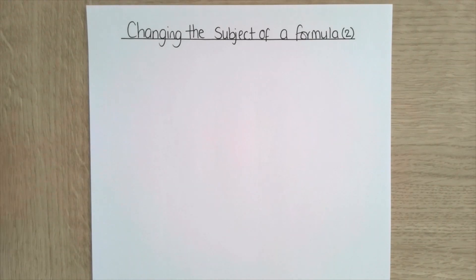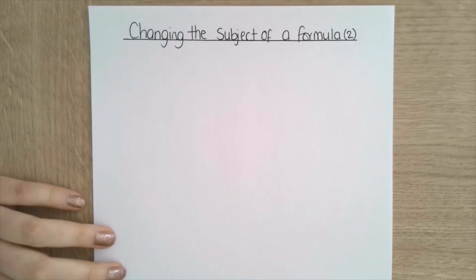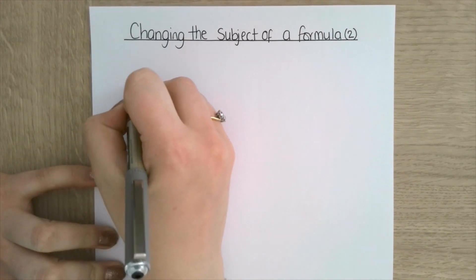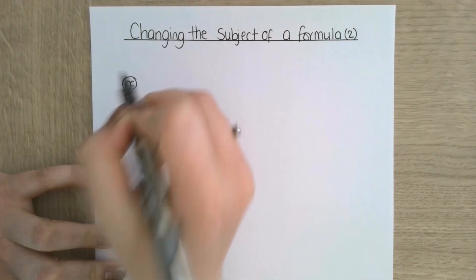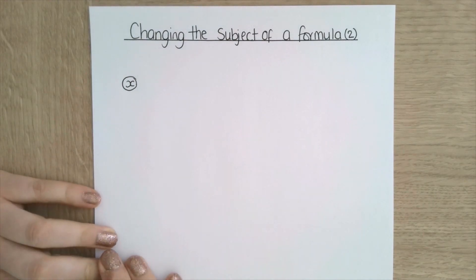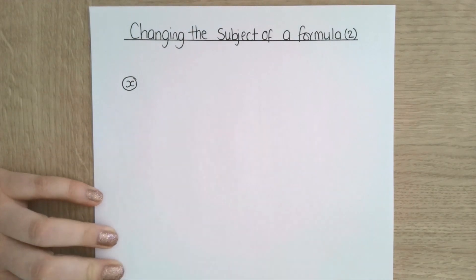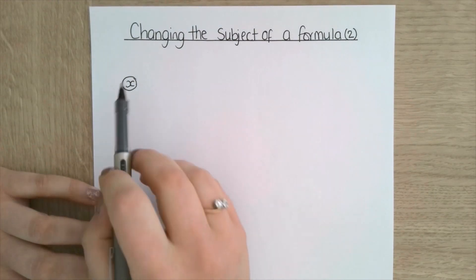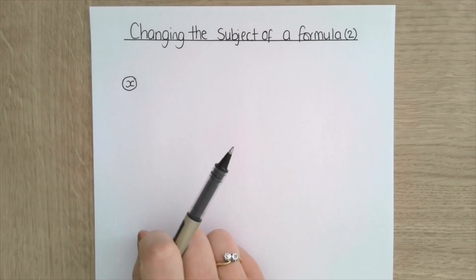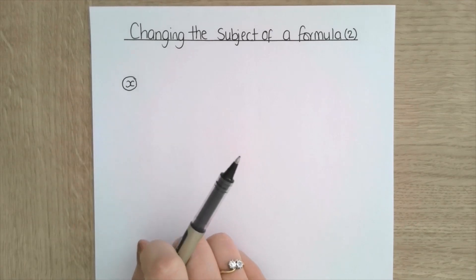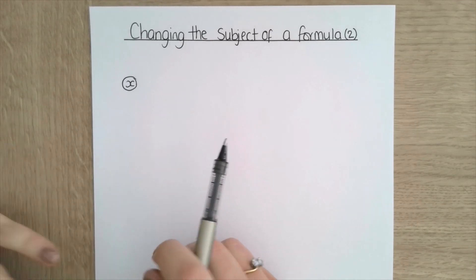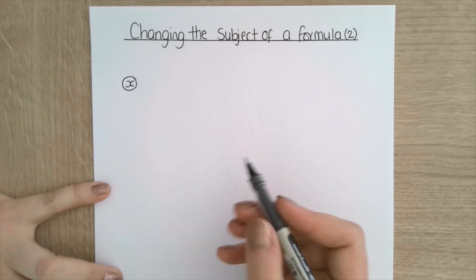So just as in my previous video, I'm just going to leave the letter that I would like to make the subject in a circle above the formula, rather than writing out 'make x the subject of the formula'.